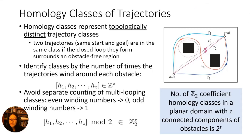I'll now formally explain the path prospects heuristic. In algebraic topology theory, a homology class represents a group of topologically distinct trajectories. Two trajectories belong to the same class if, when we join them together to form a closed loop, the region they surround contains no obstacles.